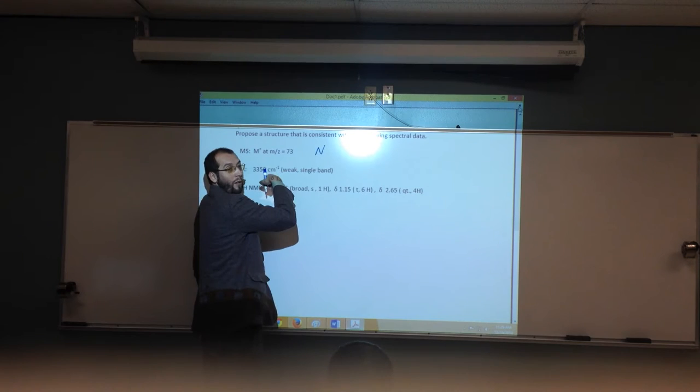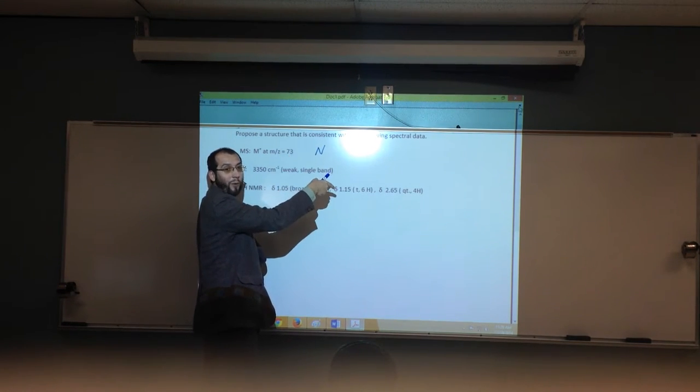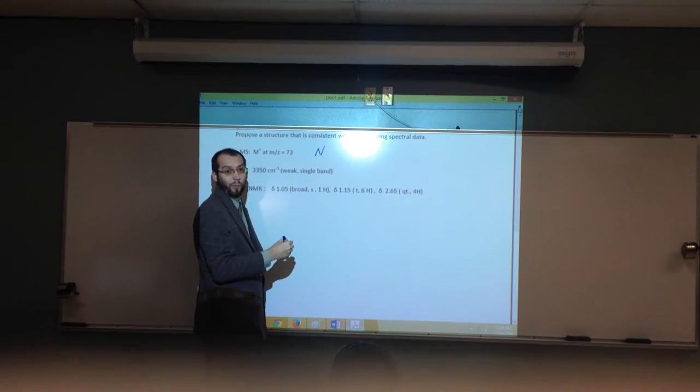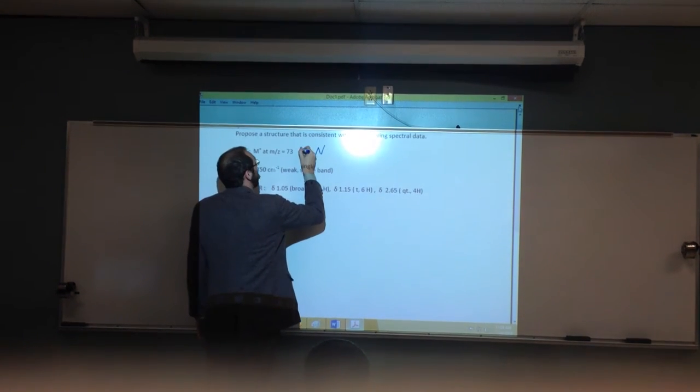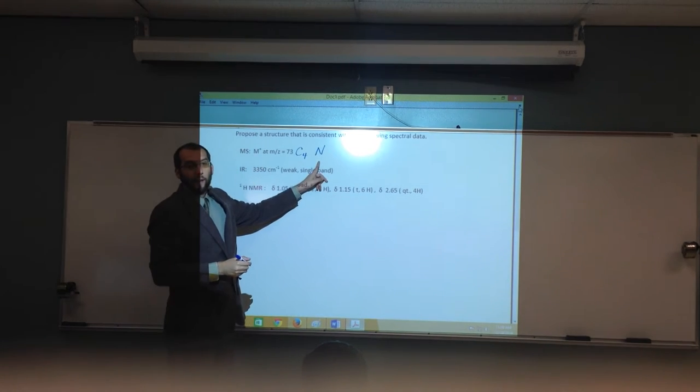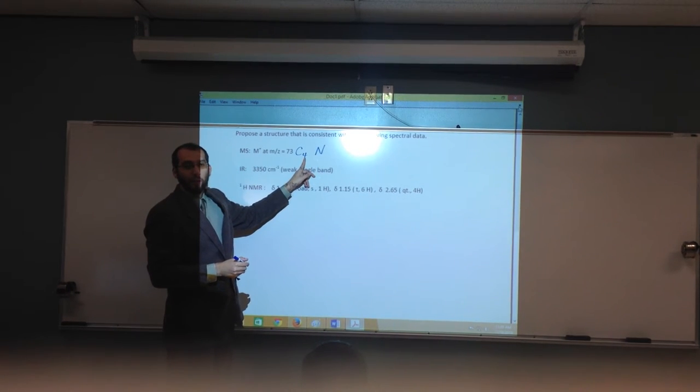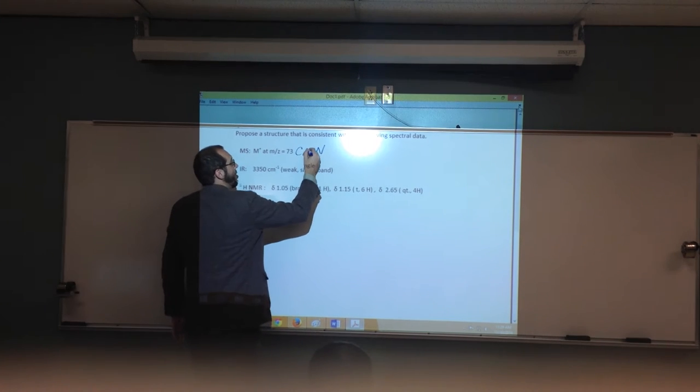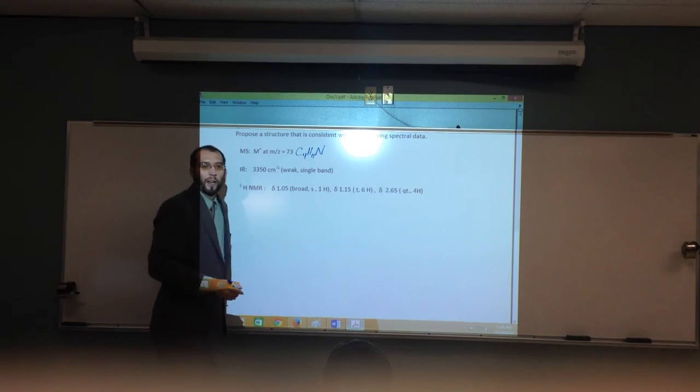Because if we take four times 12, that's going to give us 48. Then we add 14, and then we'll just have enough room for the hydrogens. So it's going to be C4, and what's the H? It's going to be actually 11.